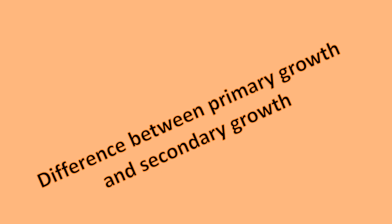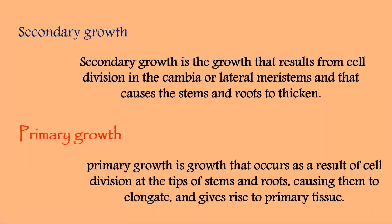Primary growth occurs due to cell division in the cambium and apical meristems at the tip of root and stem, which causes them to elongate and give rise to primary tissue. While secondary growth occurs due to cambia, which causes an increase in thickness.